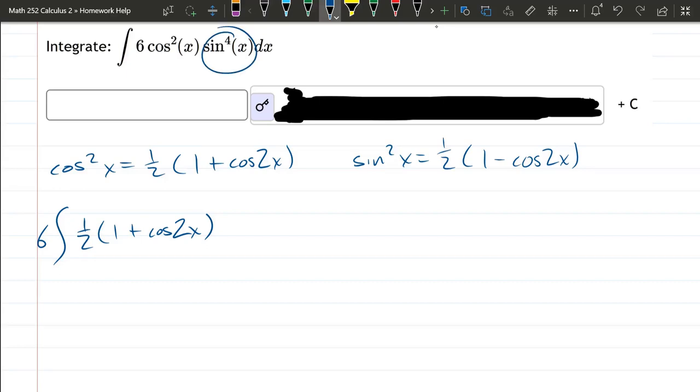Sine to the fourth. Remember, sine to the fourth is sine squared squared. So we're actually looking at sine squared squared, which is this whole thing squared. So we have one half squared times one minus cos 2x squared dx.